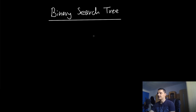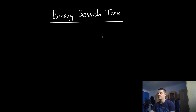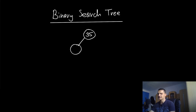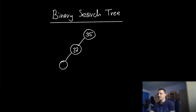A binary search tree adds a constraint to this, which is the following: the nodes to the left have always got to be smaller than the root node. So if we have for example the number 35 here, a node to the left has to be less than or equal to 35 — so we can say it's 27. Now if we have a node to the left of 27, it has to be smaller than 27, for example 15.